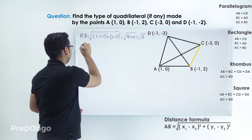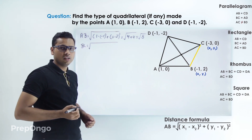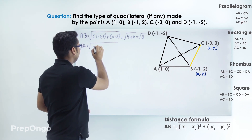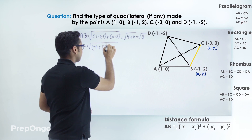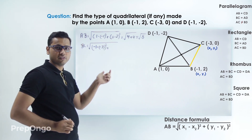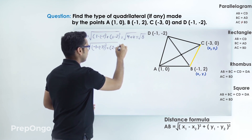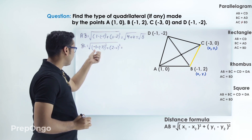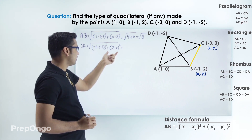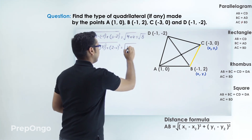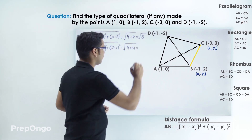Now let's find BC. Putting in the values, this will be (minus 1 minus minus 3) squared plus (2 minus 0) squared, which gives 2 squared plus 2 squared, that is root of 4 plus 4, and BC is again coming out to be root 8.